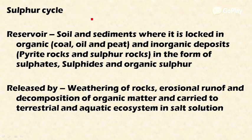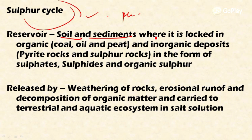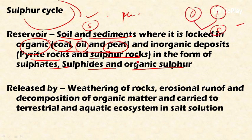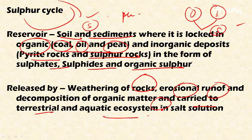Another important cycle is the sulfur cycle, which is also a sedimentary cycle. The reservoir for the sulfur cycle, as in the phosphorus cycle, is the soil and sediments where it is locked in organic sources like coal, oil, and peat, as well as inorganic deposits like pyrite rocks and sulfur rocks in the form of sulfides and organic sulfur. Sulfur is released by weathering of rocks, erosion, runoff, and decomposition of organic matter, and is carried to terrestrial and aquatic ecosystems in the form of salt solution.